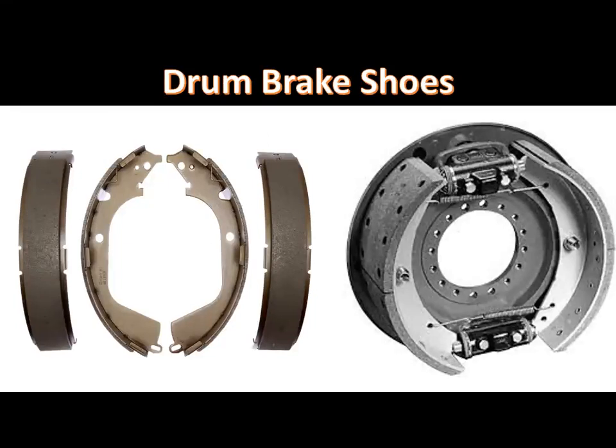The drum brake shoes are made from stamped steel. The brake linings are riveted or bonded to the brake shoes, and the curvature of the brake shoes and linings matches the contour of the brake drums. Brake linings must be able to withstand extreme heat. The brake linings may be organic, semi-metallic, metallic, or synthetic. Organic brake linings are made from non-metallic fibers bonded together to form a composite material, and may contain friction modifiers such as graphite and powdered metals, as well as fillers, binders, and curing agents.